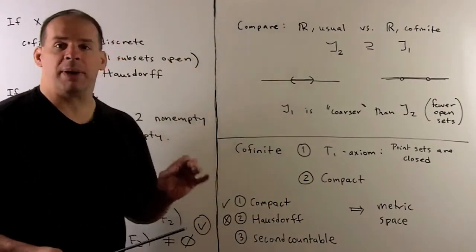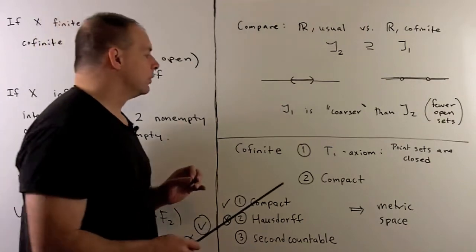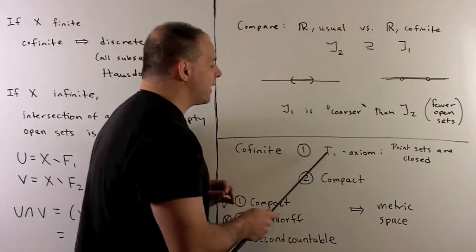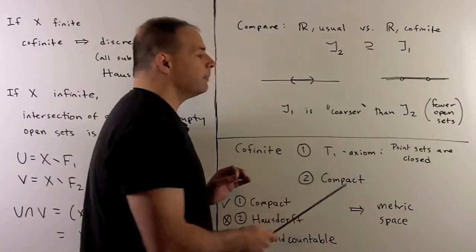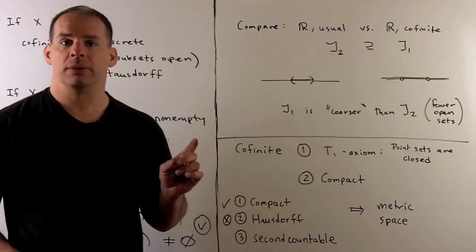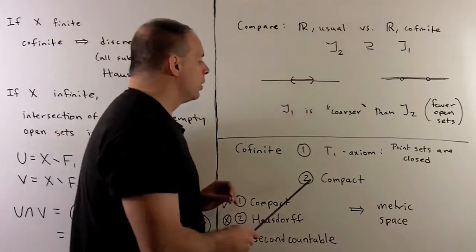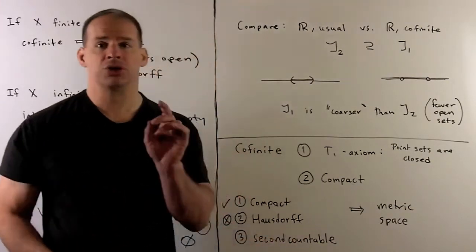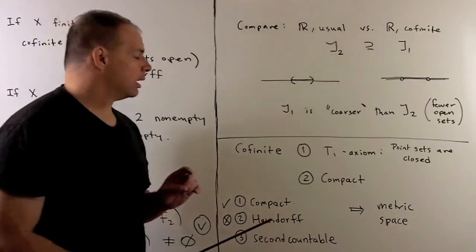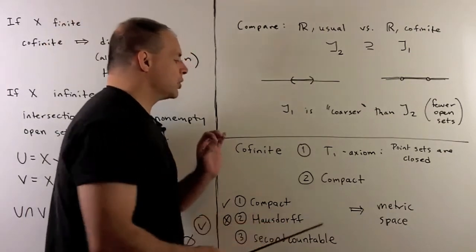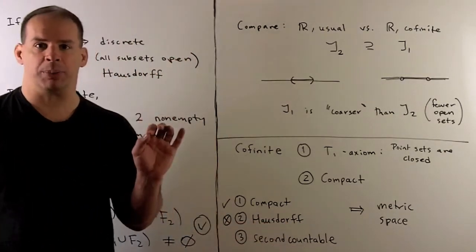Additional facts about the cofinite topology. First, it satisfies the T1 separation axiom. So point sets are closed. Point sets are finite, so closed. We have compact. I'll show that on the next board. This is interesting because we see how close we come to being a metric space.